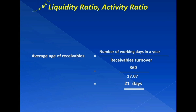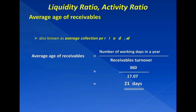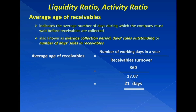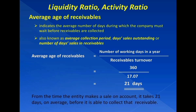This ratio, which is also known as average collection period, days sales outstanding, or number of days sales in receivables, is useful in evaluating an entity's credit and collection policies, as it indicates the average number of days during which the company must wait before receivables are collected. For Elizabeth Tailoring Materials Store, from the time it makes a sale on account, it takes 21 days on average before it is able to collect that receivable.